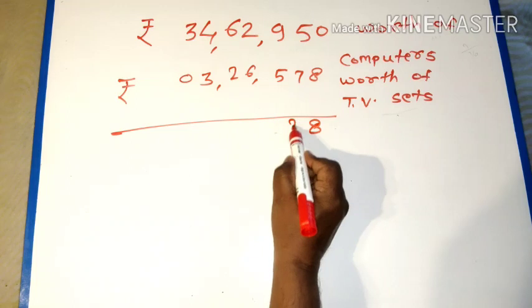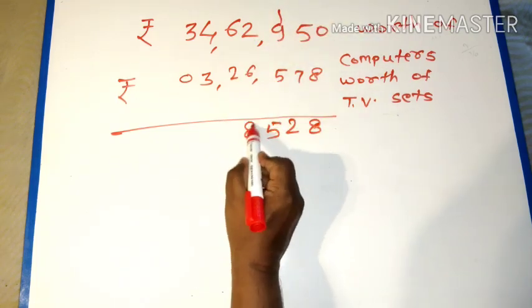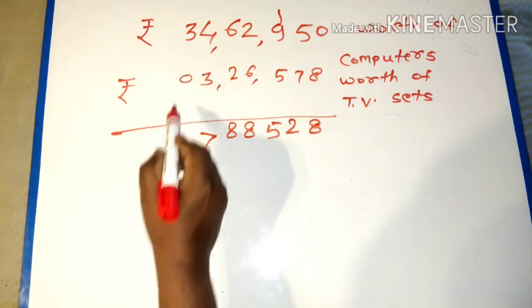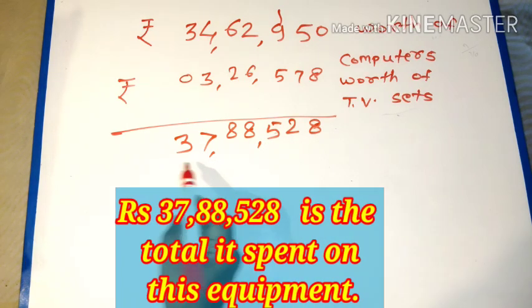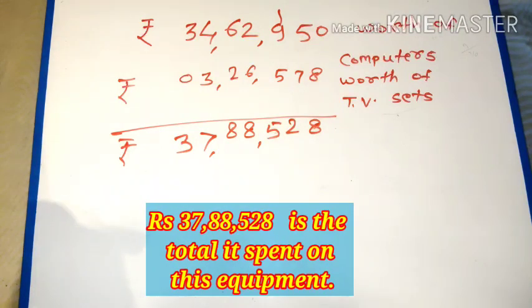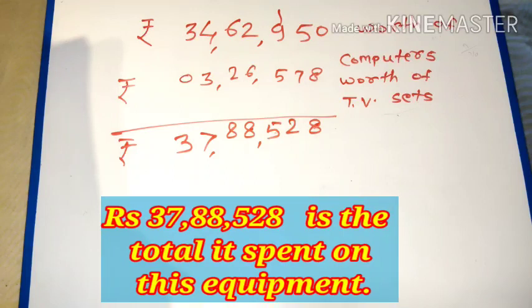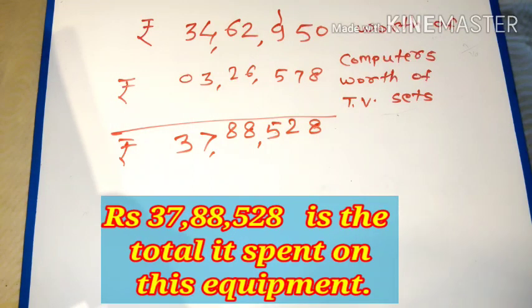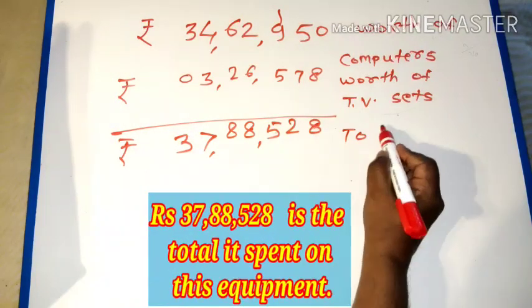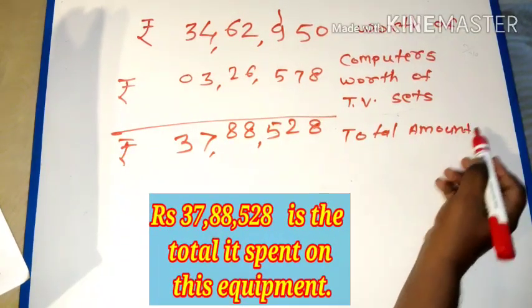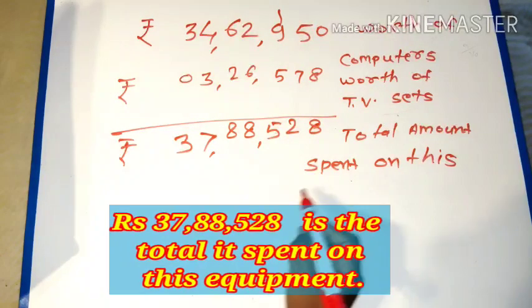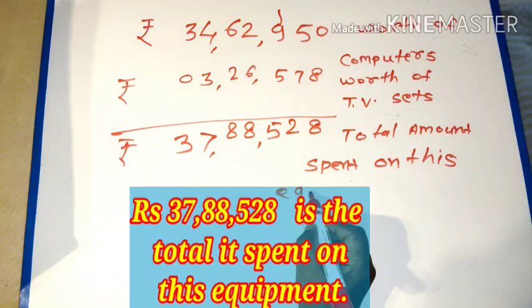Eight plus eight equals sixteen. Five plus seven equals twelve. Three plus zero equals three. Thirty-seven lakh eighty-eight thousand five hundred twenty-eight rupees. Total amount spent on this equipment.